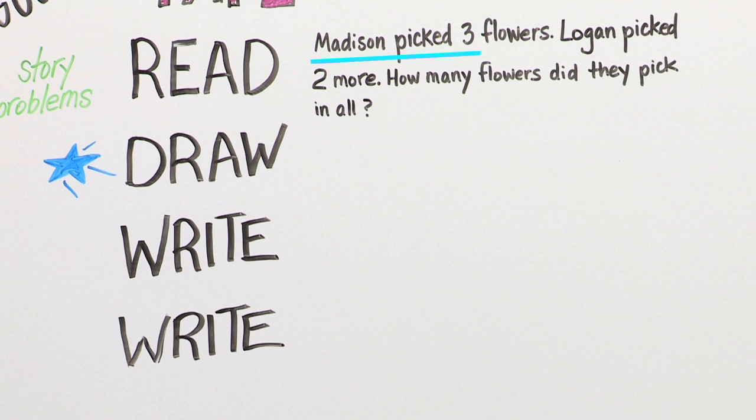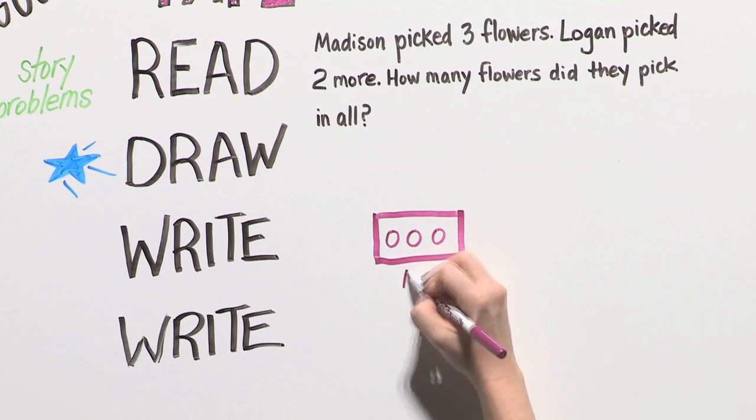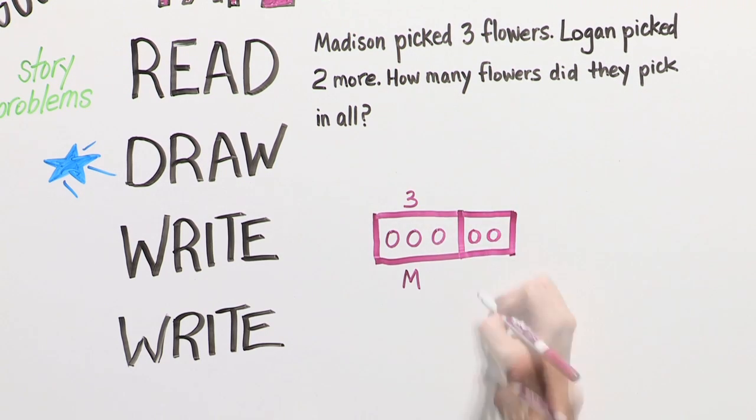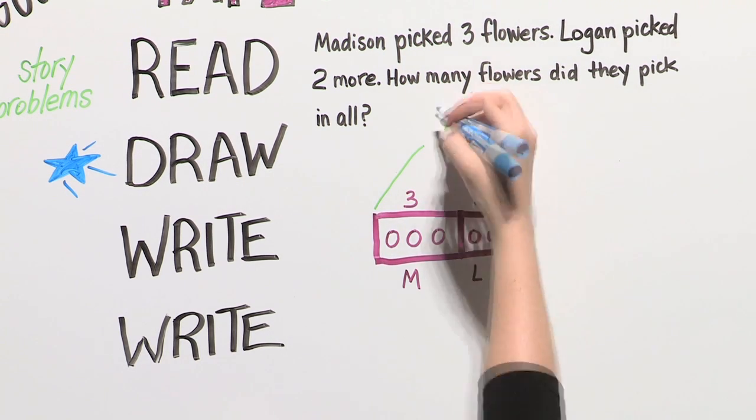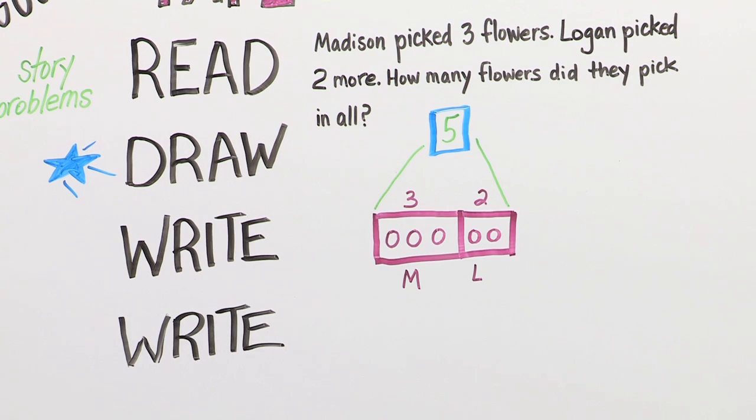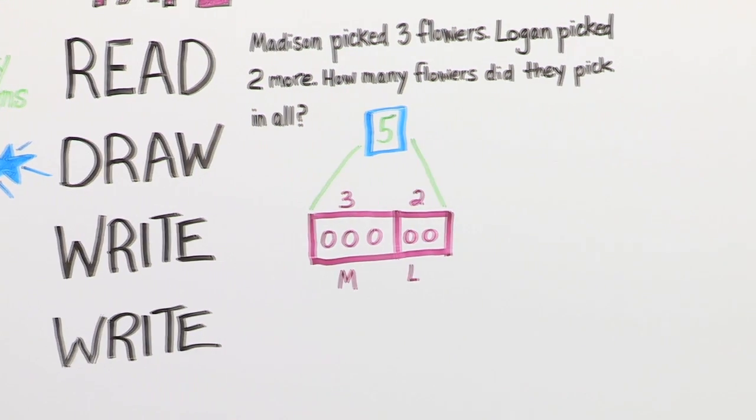Madison picked three flowers. Logan picked two more. How many flowers did they pick in all? This shows Madison's flowers. This shows Logan's flowers. We show the total on a tape diagram like this. Now we know three plus two equals five.